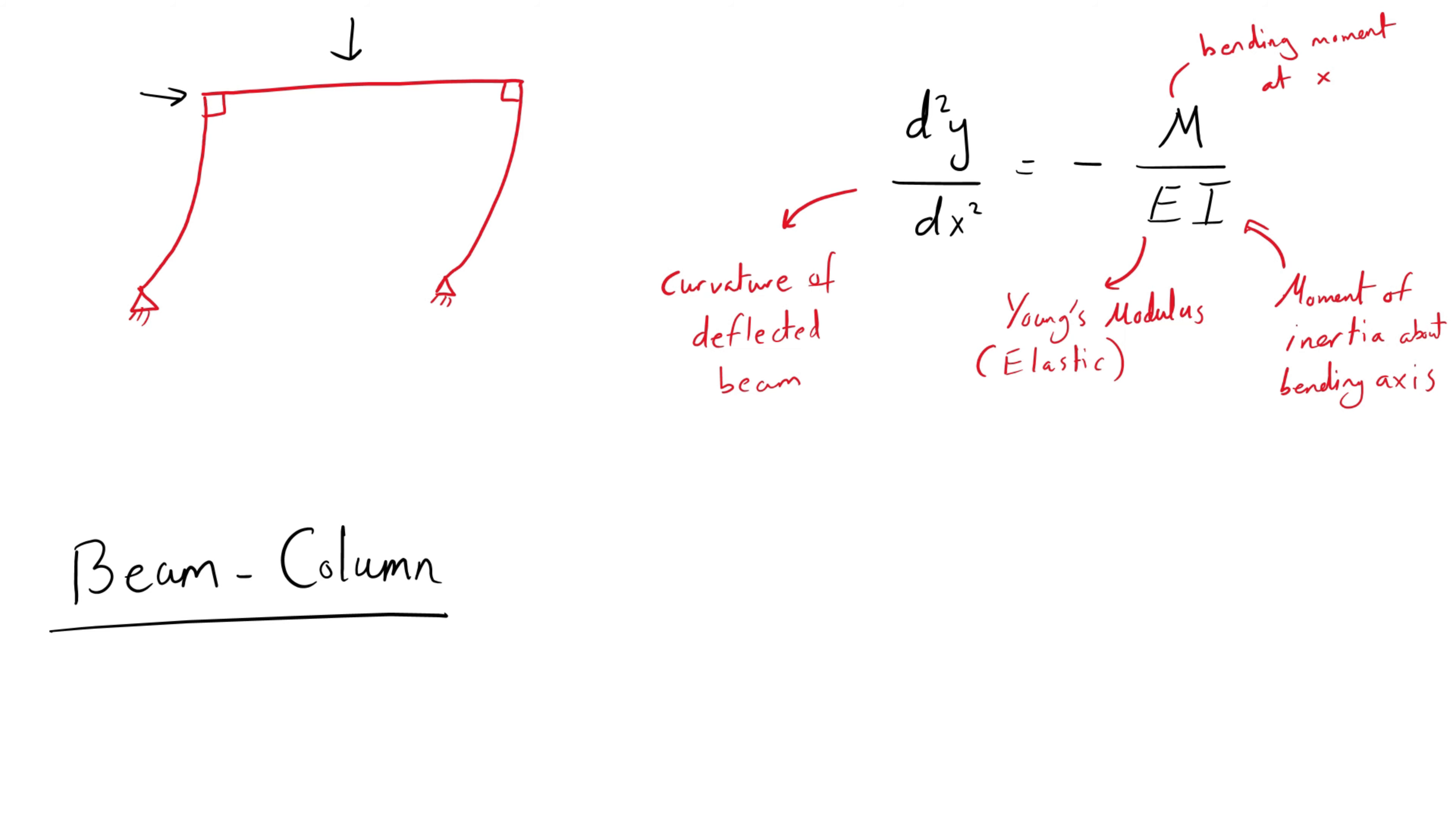From the deflected shape as well as the governing differential equation of an Euler-Bernoulli beam, which I discussed in a previous video mentioned in the description, we can see the curvature of the member is directly correlated with the induced bending moment.